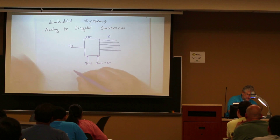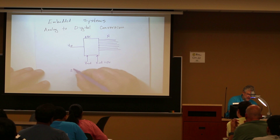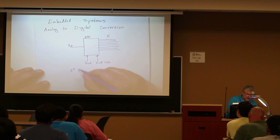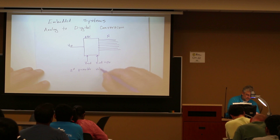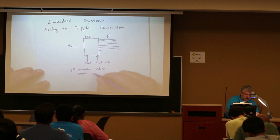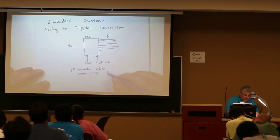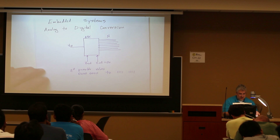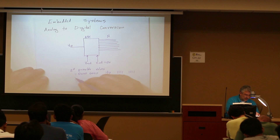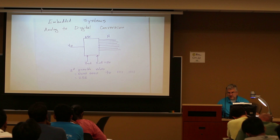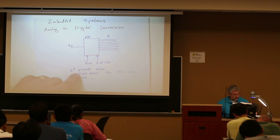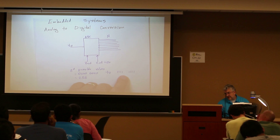I think you meant 2 to the n possible values, right? And that will be from 00000000 to 11111111. So that's a total of 256 possible values, from 0 to 255.